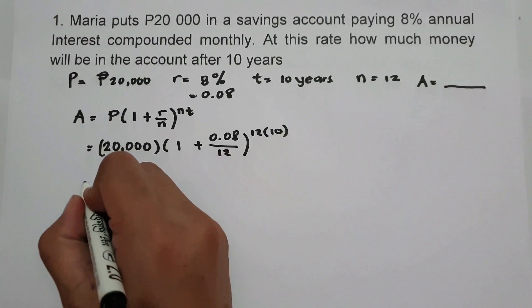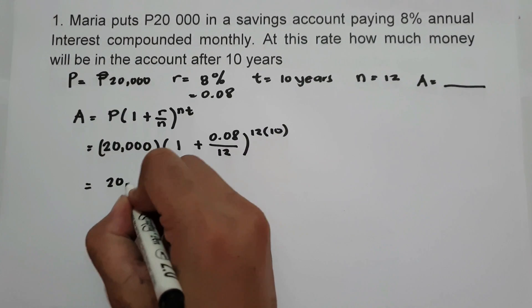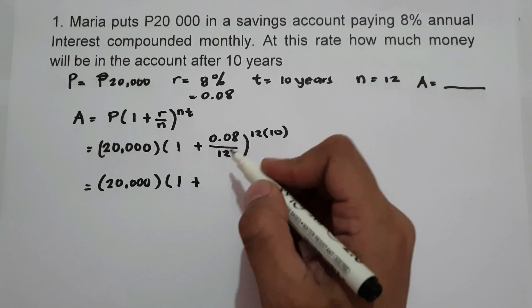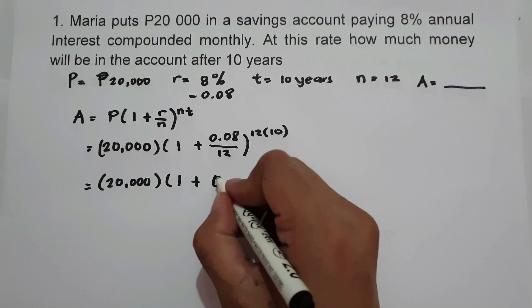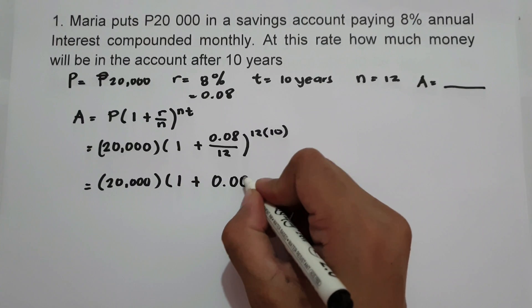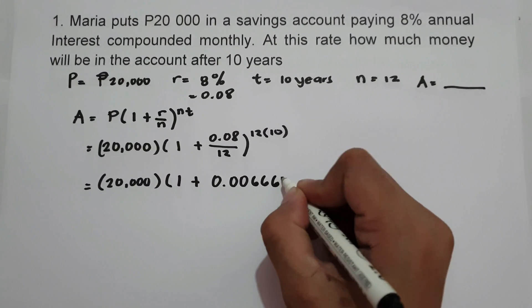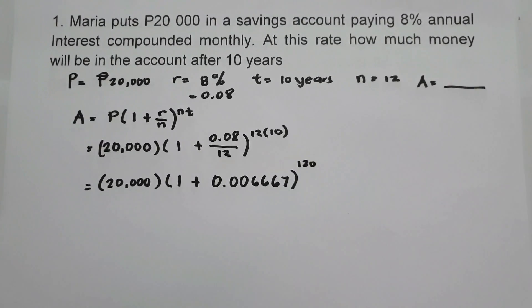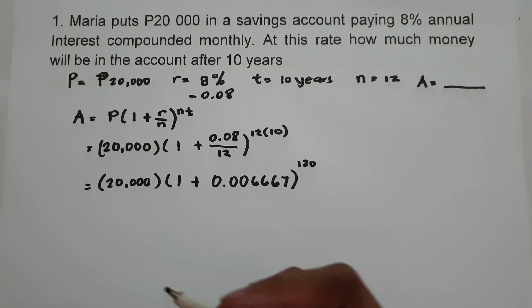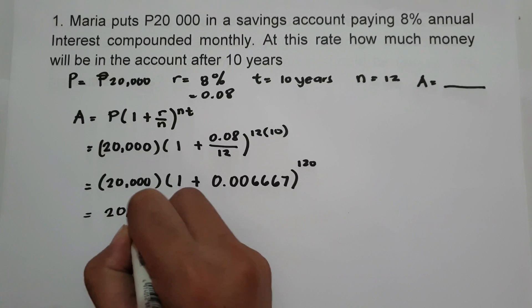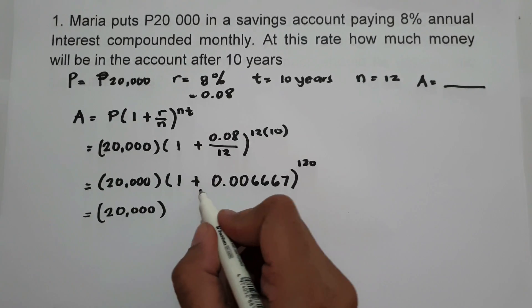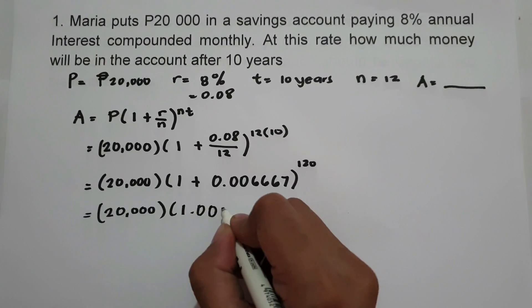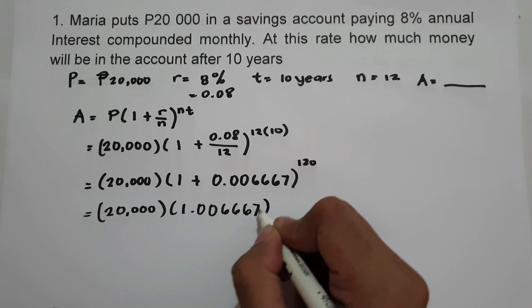Simplifying: 0.08 divided by 12 is 0.006667. And 12 times 10 is 120. So we rewrite as 20,000 times 1 plus 0.006667, which is 1.006667, raised to 120.